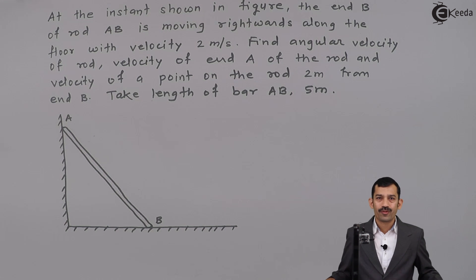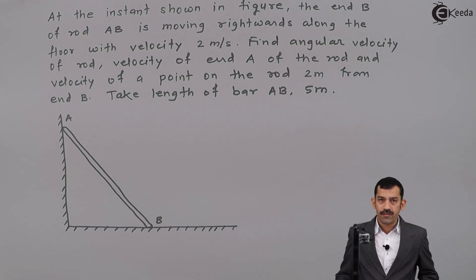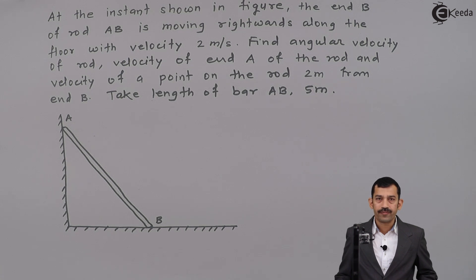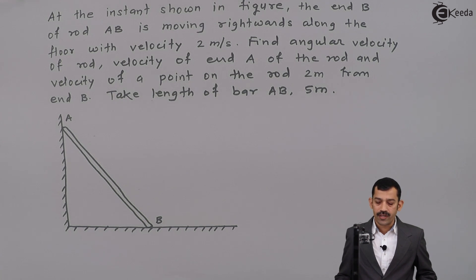Hi friends, we will solve a problem on kinematics of rigid bodies. What is given in this problem? At the instant shown in the figure, the end B of the rod AB is moving rightwards along the floor with a velocity of 2 meters per second. Find the angular velocity of the rod, velocity of end A of the rod, and velocity of the point on the rod 2 meters from end B. Take the length of bar AB as 5 meters.